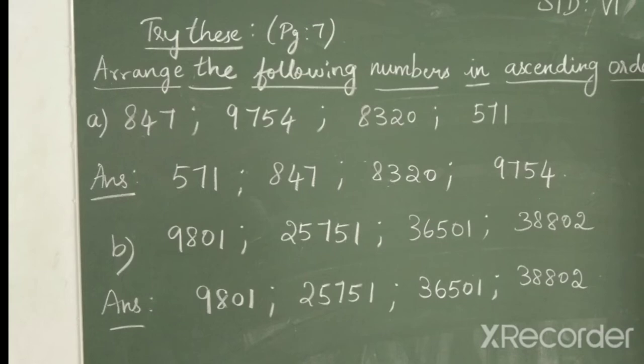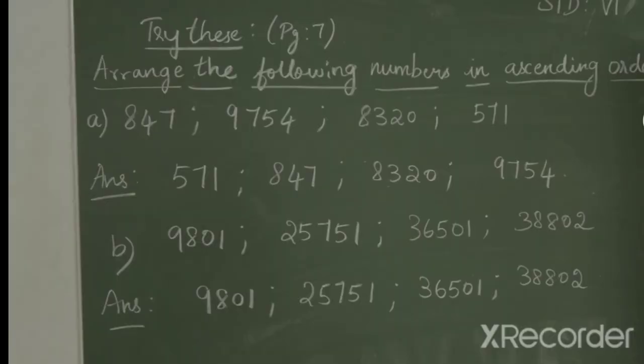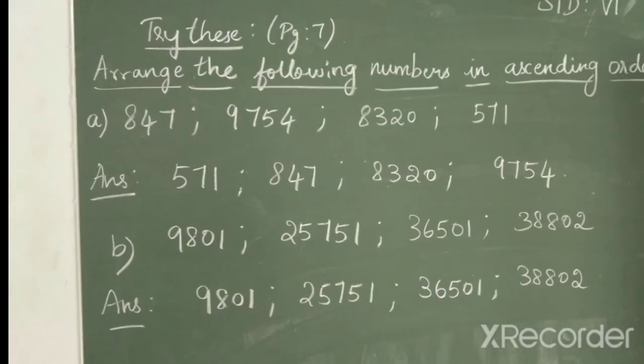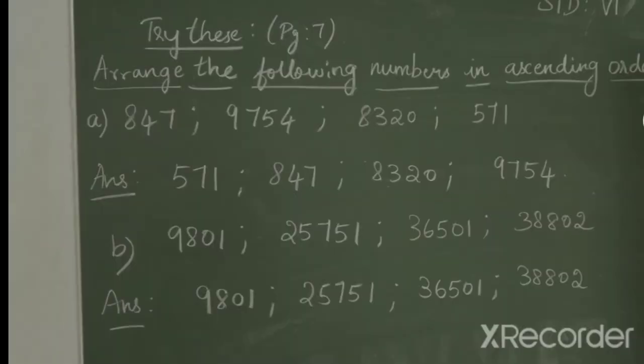So, 9801. Then, the other 3 numbers are 5-digit numbers. So, among the 3 numbers, the smaller number will be 25751, then comes 36501, followed by 38802.